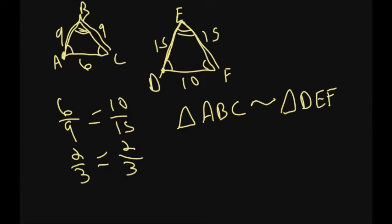So ABC is similar to DEF. And then the second part of that is giving the scale factor. Since my similarity statement is ABC to DEF, I have to take that same ratio. So I have to say it's 6 to 10, which when we reduce that is 2 thirds. So my scale factor there is 2 thirds.